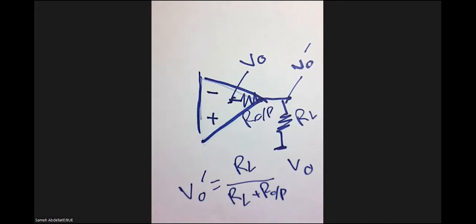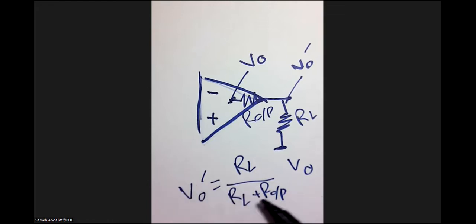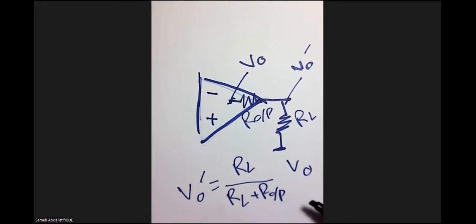However, let's assume a dramatic scenario where R-output equals R-load. In this case, V-output-dash will be 50% of the output — you lose 50% of your power to the output resistance. This is the loading effect of the output resistance.